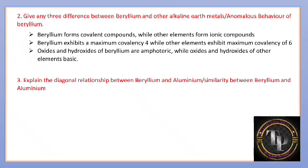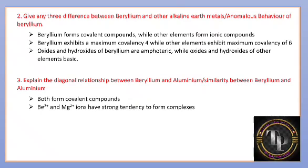Explain the diagonal relationship between beryllium and aluminium, or the similarity between beryllium and aluminium. Both form covalent compounds. Both Be2+ and Al3+ ions have a strong tendency to form complexes. Both chlorides are Lewis acids. These are the key similarities.